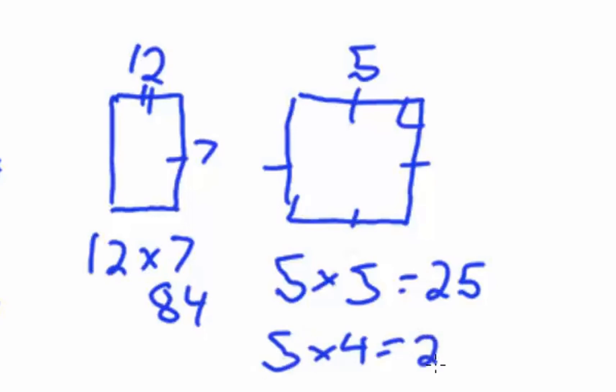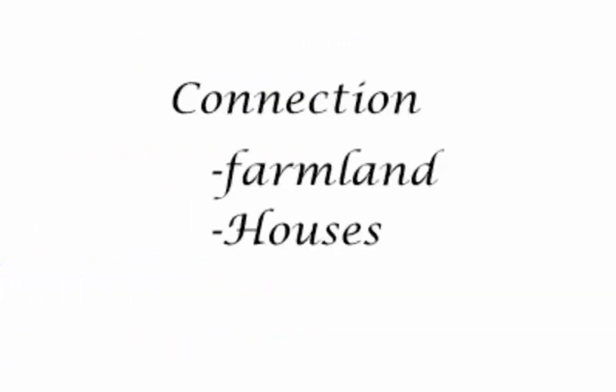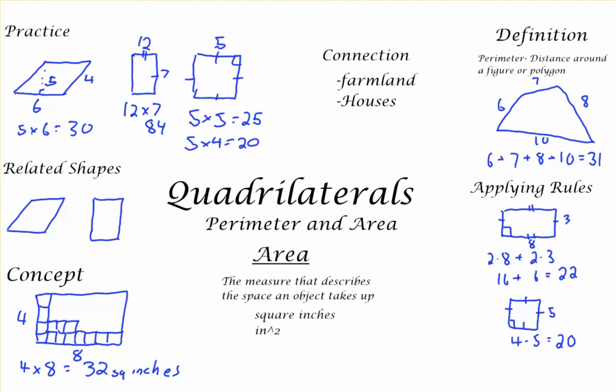When it comes to the area and perimeter of quadrilaterals, the connection is strong. As many of our houses, much of our farmland, many of our cities are based upon these regular four-sided shapes and knowing the distance within them and around them.